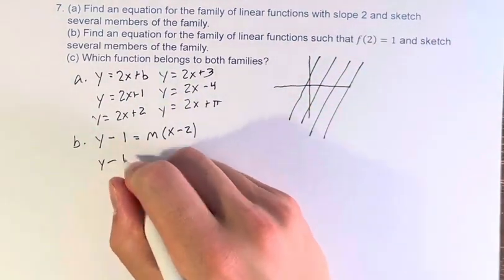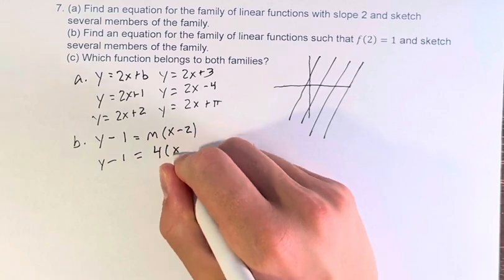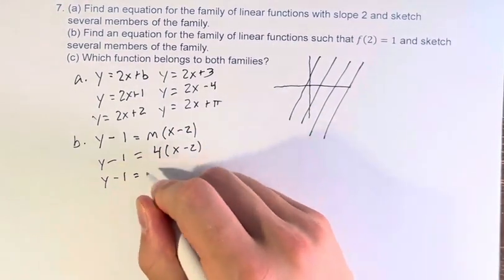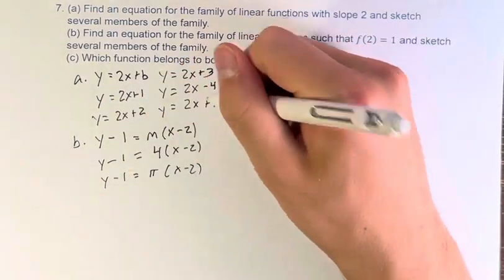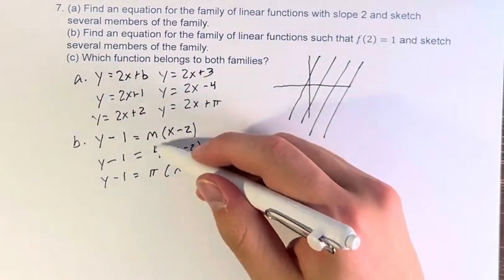So for example, you have y minus 1 is equal to 4 times x minus 2, y minus 1 is equal to pi x minus 2. And in the same way that all of these are valid options, all of these are valid options for m.